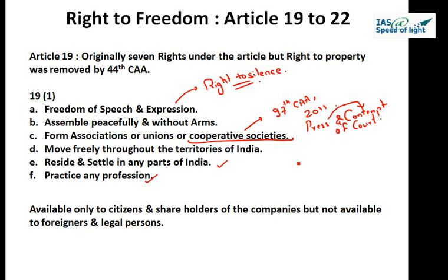The freedom of assembly is not absolute. The assembly must be non-violent and must not cause any breach of public peace. If an assembly is riotous, it is not protected under Article 19(1)(b). Reasonable restrictions may be imposed. Article 19 Part 3 gives the restrictions which can be imposed by the state. The third freedom is to form associations and unions and cooperative societies, which was added as a fundamental right by the 97th Constitutional Amendment Act, 2011.